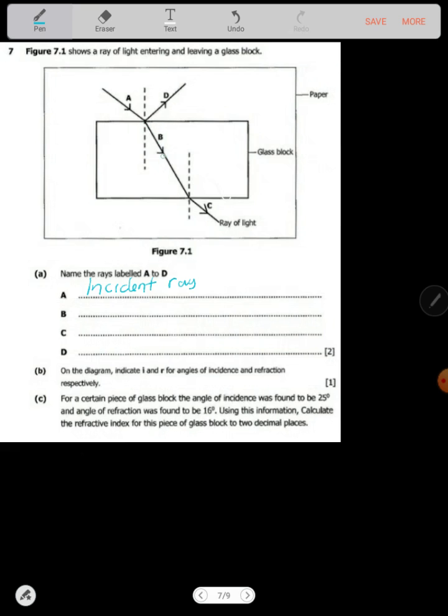Part B, when you look at B, B is bending. When the ray is there, it's bending. So B is the refracted ray, since it's bending.